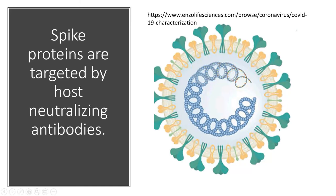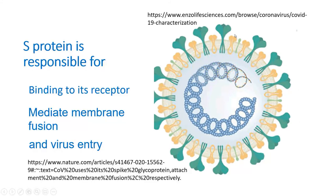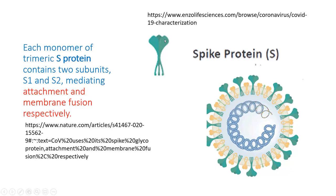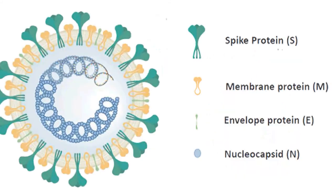The spike proteins are targeted by neutralizing antibodies from the host. The S protein is responsible for binding, membrane fusion, and entry into the host cell. Each monomer of the trimeric S protein contains two subunits, S1 and S2. S1 is responsible for attachment to the receptor, and S2 is responsible for fusion with the membrane.